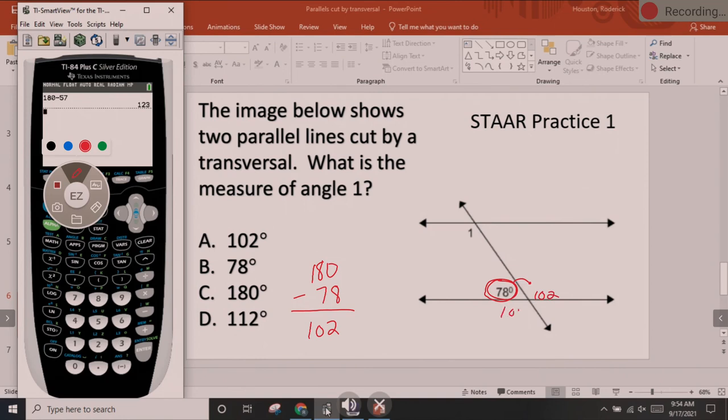So we know that this one is 102 and this one is 78. All of the small ones will be 78. All of the big ones will be 102 and 78. And they kind of alternate. 78, 102 and then they flip. 78, 102 and then they flip. And so they're asking us for angle 1. It is 102. Our answer is A.